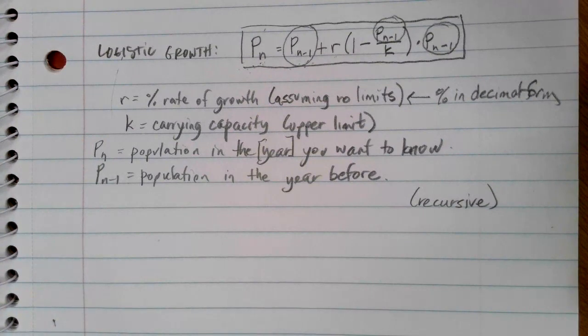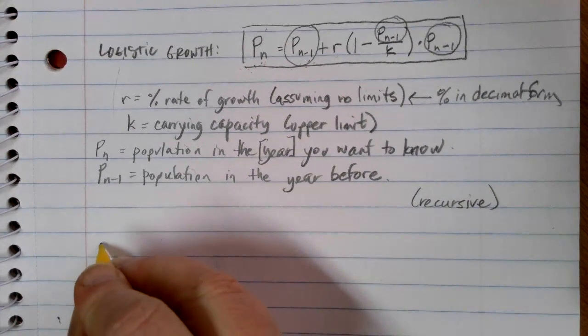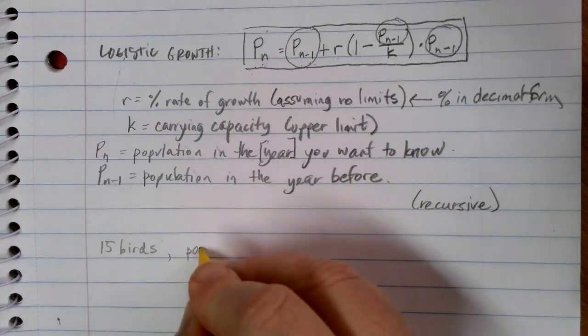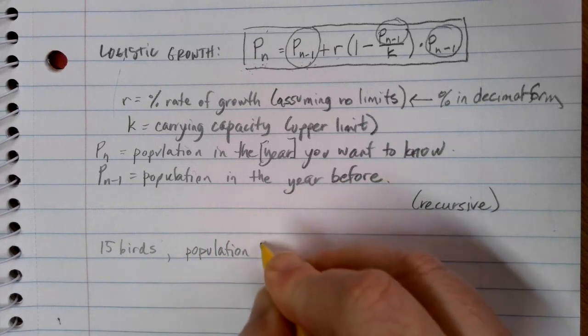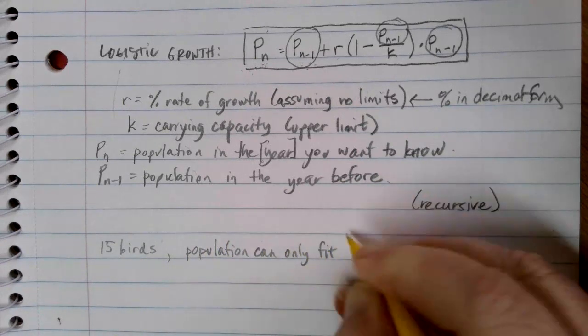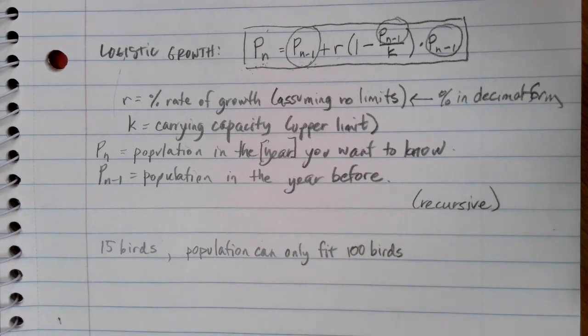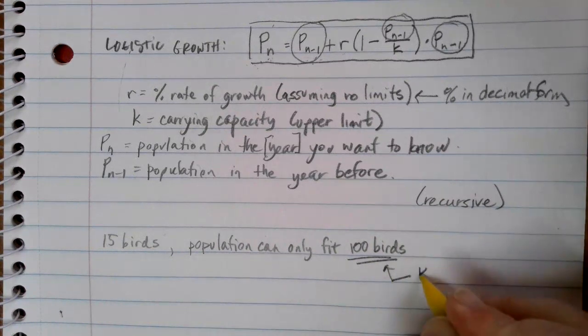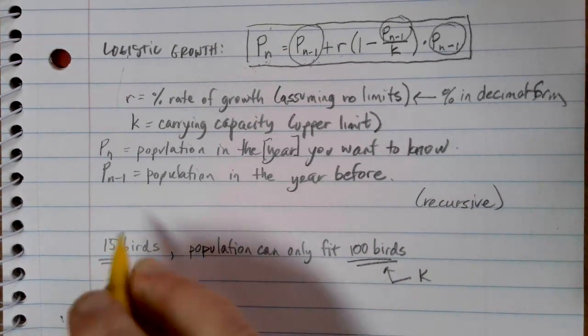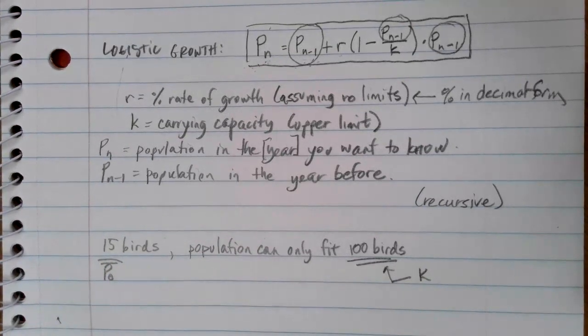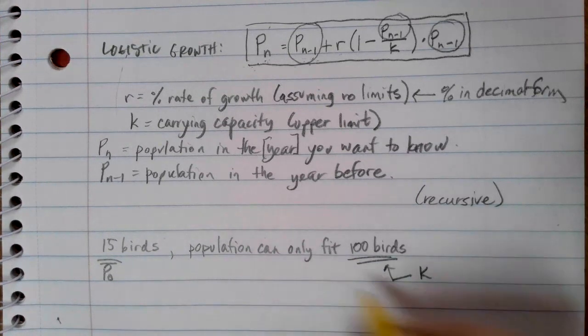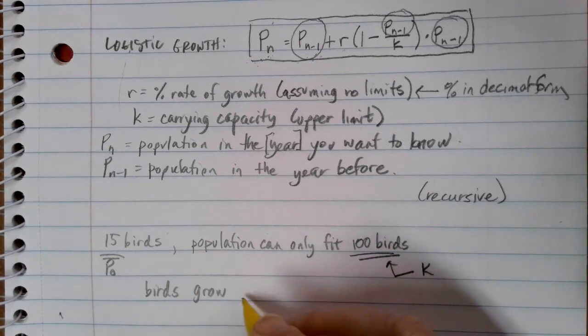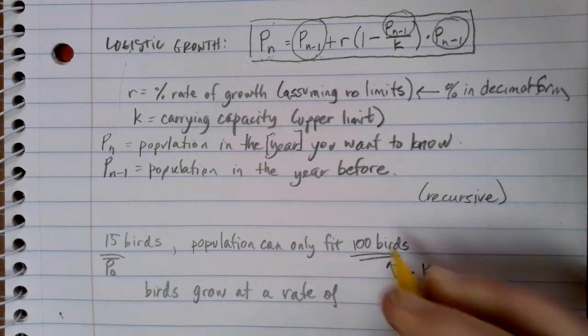And then we'll go into a more detailed example in the next video. So let's suppose that we have maybe 15 birds in a forest and the population can support or the environment can only fit 100 birds before we run out of space. So that gives us this 100 birds is that limiting maximum. So that's going to be our K value in our formula. And this 15 birds is our starting value. So our population at time zero. Now we do need a growth rate as well. So if there were no limitations in the environment, let's say that our birds would grow at a rate of 12%.